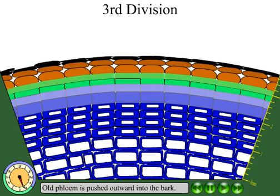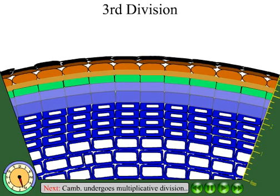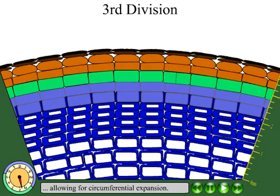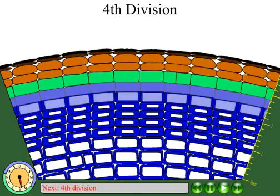In the third division, the cambium divides and produces a phloem mother cell, while the old phloem begins to be pushed and crushed to the outside. Next, the cambium undergoes multiplicative division, allowing for growth in circumference.